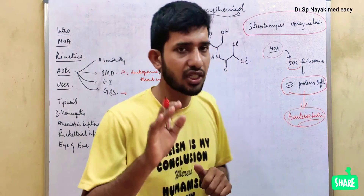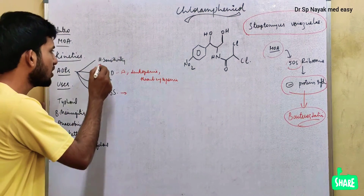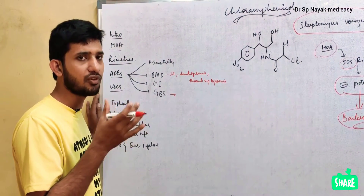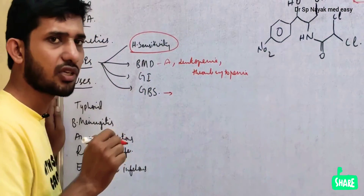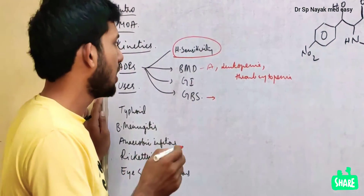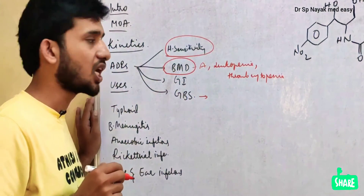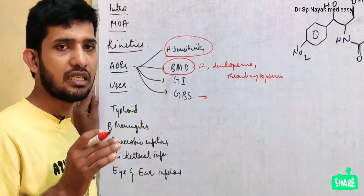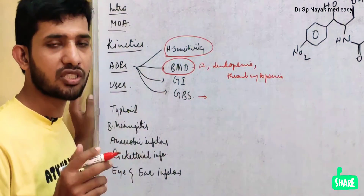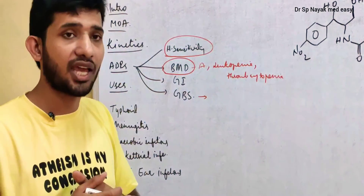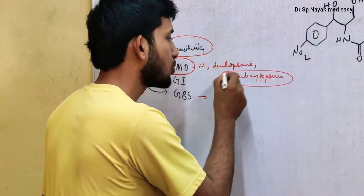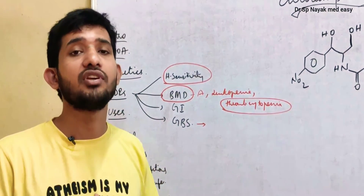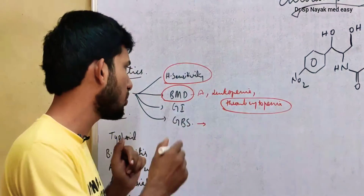Chloramphenicol has four different adverse drug reactions. The antibiotics synthesized from other microorganisms will have hypersensitive reactions, so hypersensitivity is the first adverse drug reaction. Bone marrow depression is the very important adverse drug reaction — chloramphenicol depresses the bone marrow, causing severe anemia, and it is characterized by leukocytopenia and thrombocytopenia. All white blood cell and platelet concentrations decrease, and the patient will have a high risk of infections.